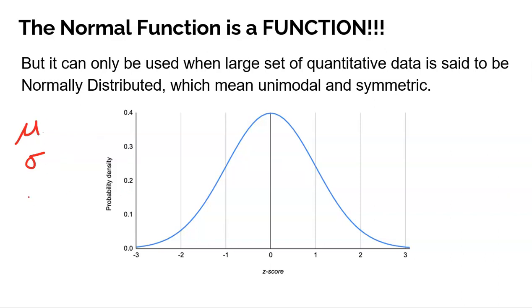The one thing that keeps all of this universal is what we call the z-score. A z-score, also known as a standardized score, is simply how many standard deviations a particular value is from the mean. The z-score formula is: take your particular value x, minus the mean, divided by the standard deviation. So the mean itself has a z-score of zero, right smack in the middle.